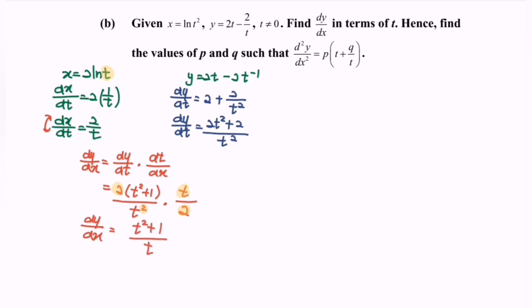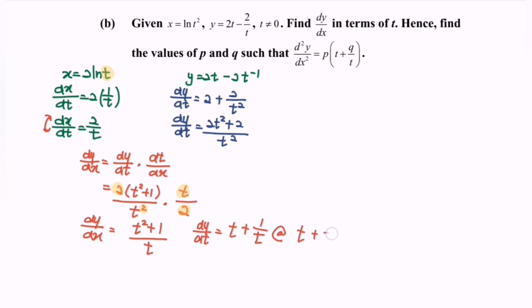Simplifying further, dy/dx equals t plus 1 over t, or equivalently t plus t to the power negative 1.